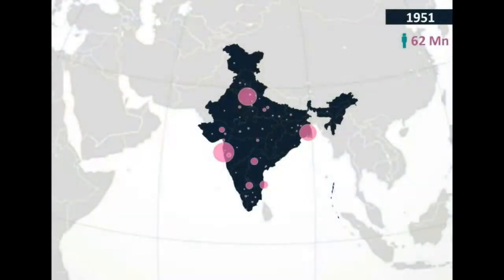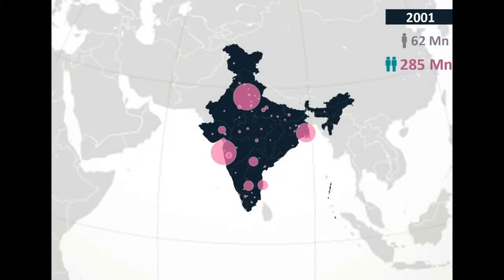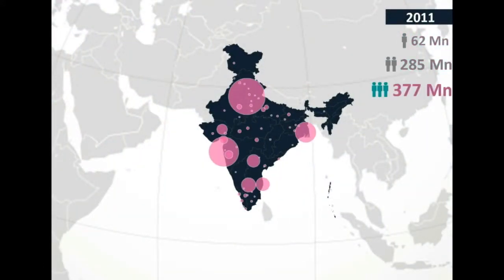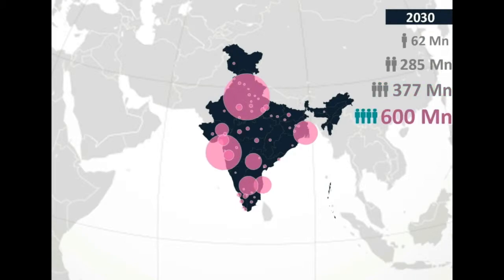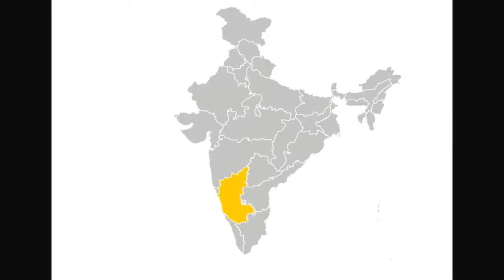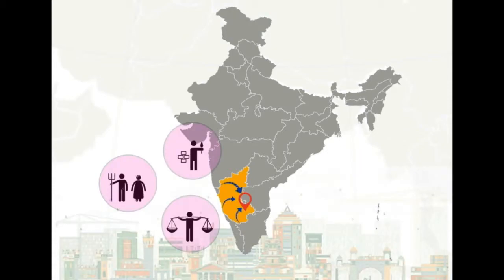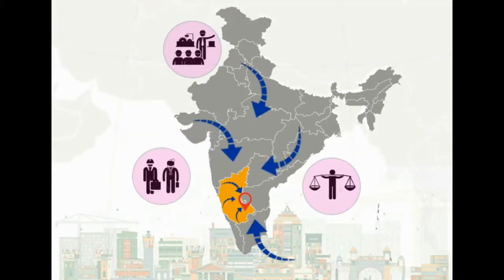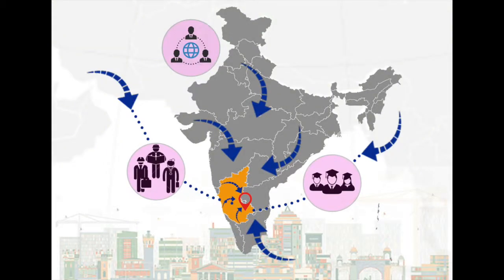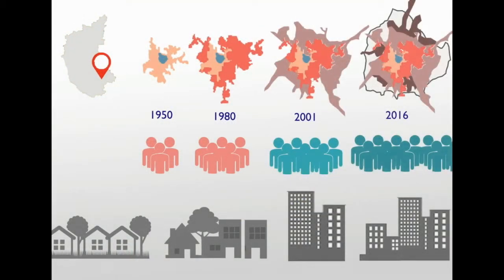India has 377 million people living in its cities and this is expected to grow to a whopping 600 million by 2030. Karnataka is one of the most urbanized states in India with the country's knowledge capital Bengaluru. The city has been attracting people from different parts of the country and the world. With growth came challenges of quality of life and sustainability.